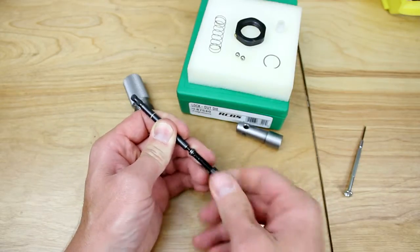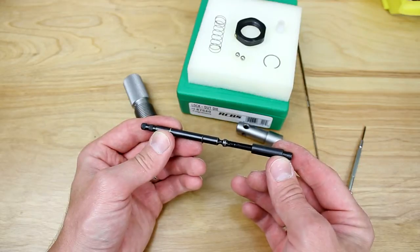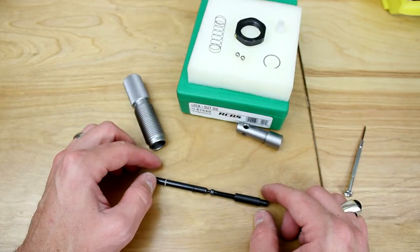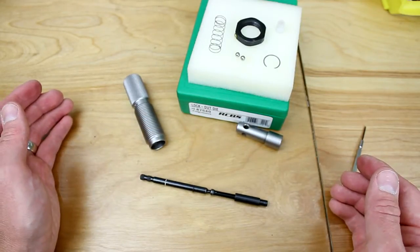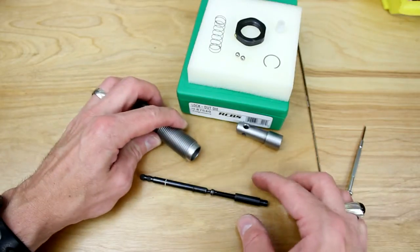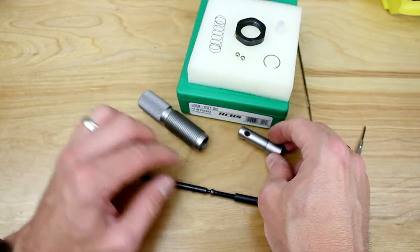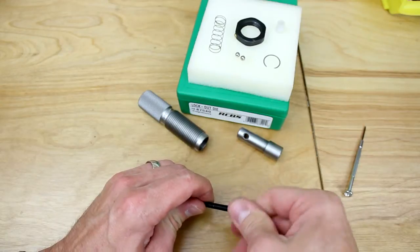And so this has got a little bit of friction so that it will hold its setting. So those are the basic parts. What we would want to do is clean the assembly and then get ready to put it back together.